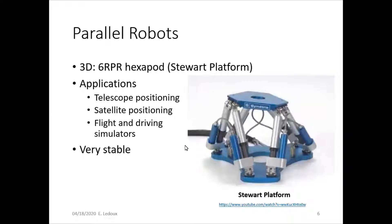Then the hexapod robot is known as the Stewart platform. This is used in applications like telescope positioning, satellite positioning, flight and driving simulators, and it's very stable. So the end effector is this piece at the top right here, and something like this can support a lot of weight.